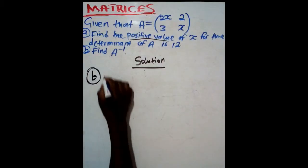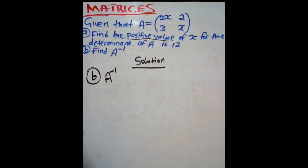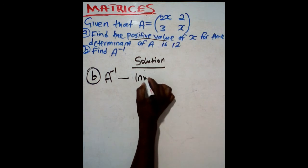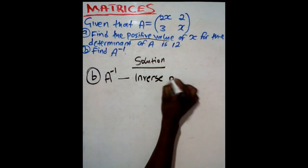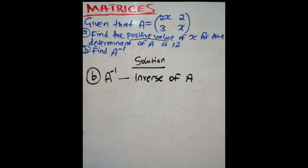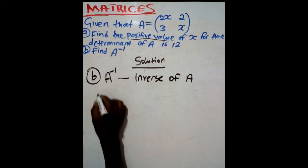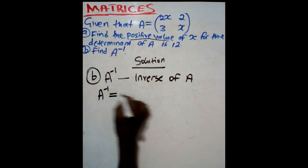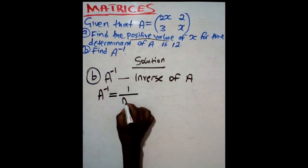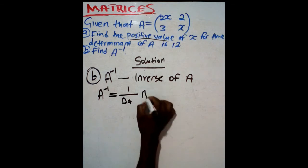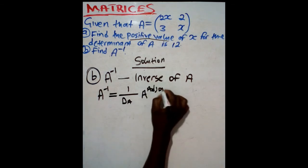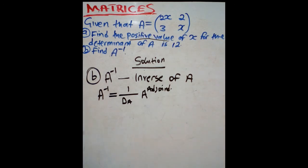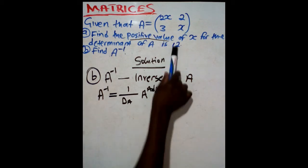When it comes to part B, the question is to find A to the power negative 1. What does this mean? This means the inverse of A. The formula for the inverse is: A to the power negative 1 is equal to 1 over the determinant of A, times the adjoint of A. Do we have the determinant? Yes, the determinant is 12, so there is no need to calculate it again.